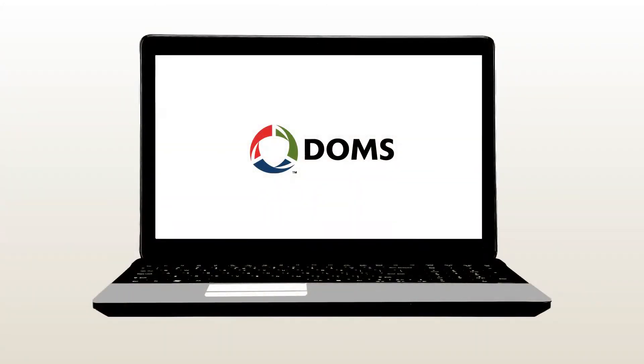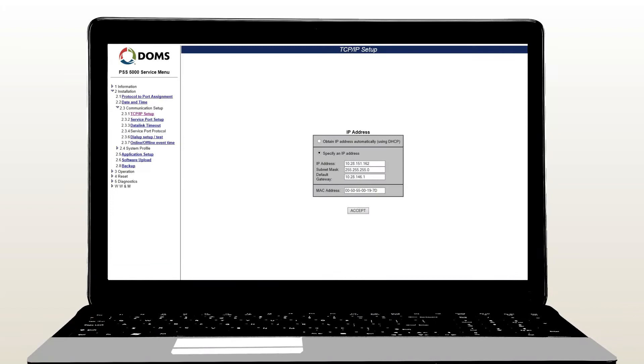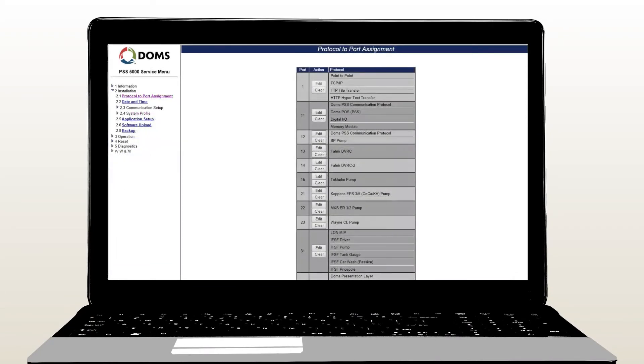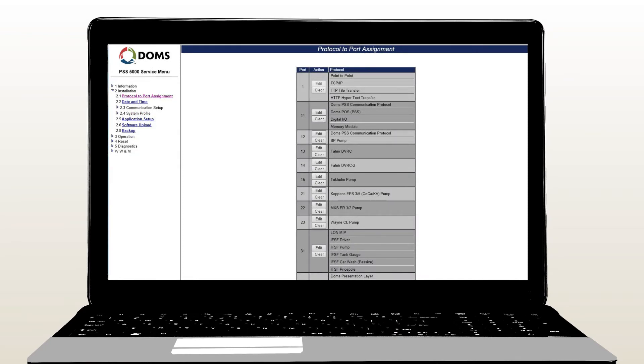Using the PSS5000 service menus, obtain the current IP address used by the PSS, all the protocol to port assignment details, and make a copy of the current PSS configuration.